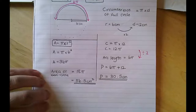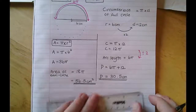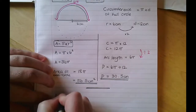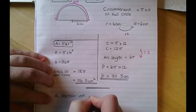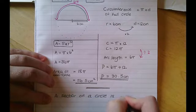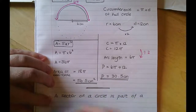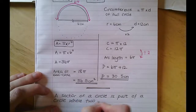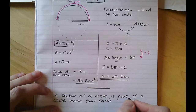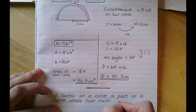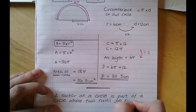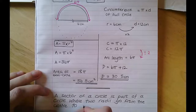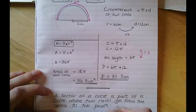Now we're going to look at sectors more generally. I highly recommend you write this definition down. A sector of a circle is part of a circle where two radii go from the centre to two points on the circumference.